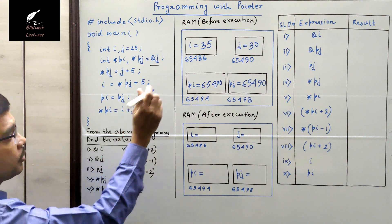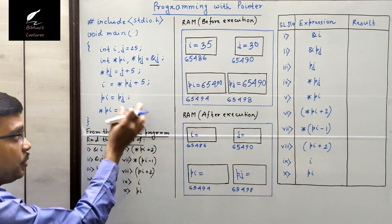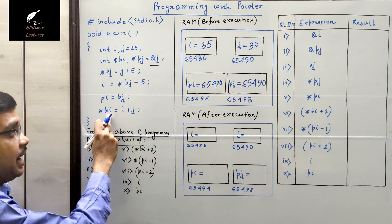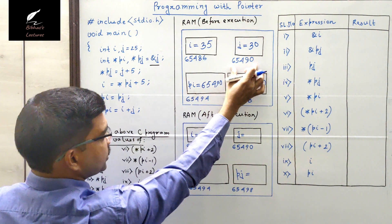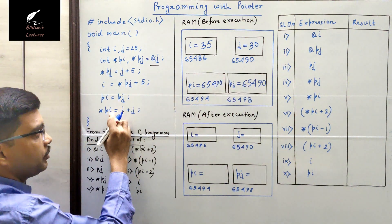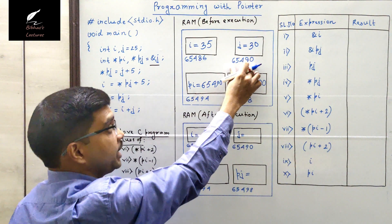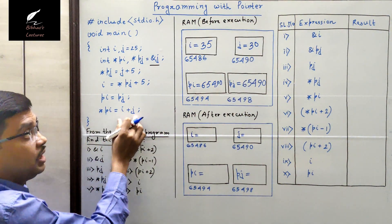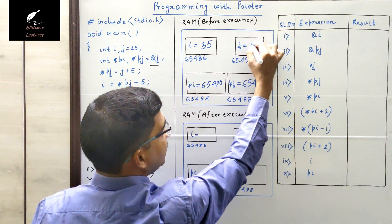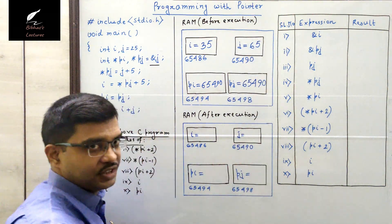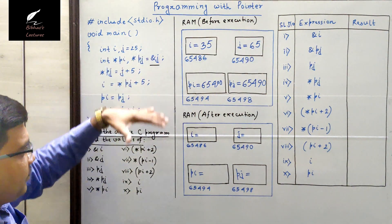In the last line of the main function we are adding i and j. i is 35 and j is 30, so 35 plus 30 equals 65. This is assigned to asterisk pi. pi is 65490, so asterisk pi means the value at location 65490 — which is j — will now be overwritten by 65.